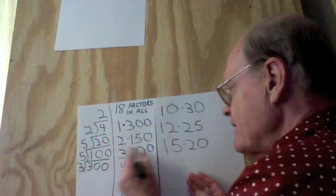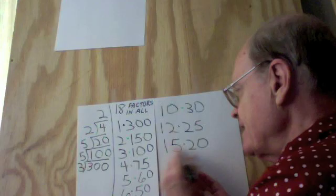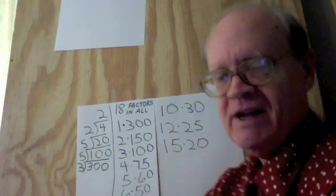So here are the 18 factors of 300: 1, 2, 3, 4, 5, 6, 10, 12, 15, 20, 25, 30, 50, 60, 75, 100, 150, 300. 18 factors, just as I predicted.